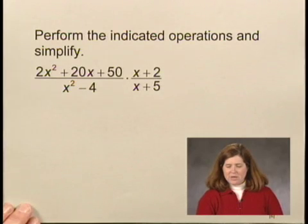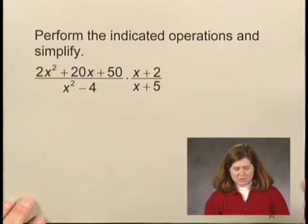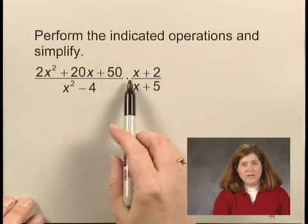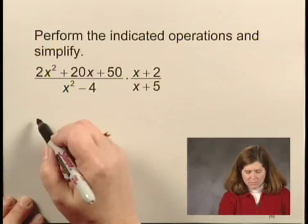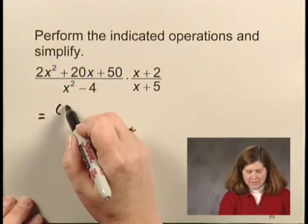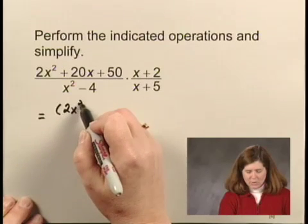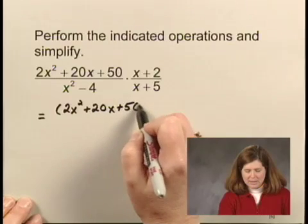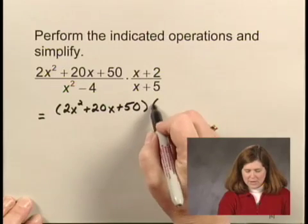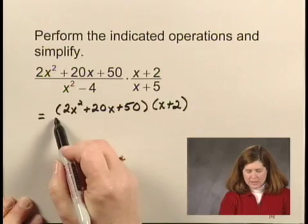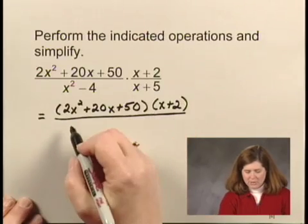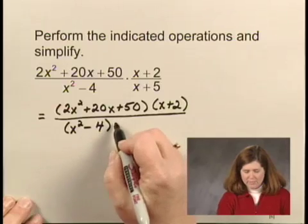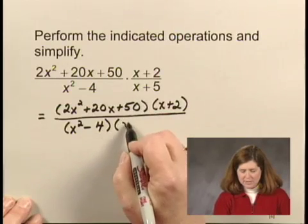To multiply, we multiply numerators and multiply denominators. I'm just going to write this out with one fraction bar by multiplying the numerators. That would be 2x squared plus 20x plus 50 times the numerator, x plus 2. And the denominators, I would have x squared minus 4 times the denominator, x plus 5.